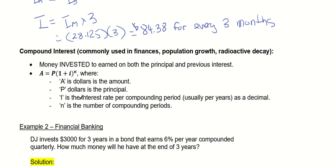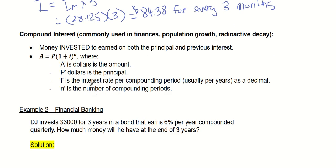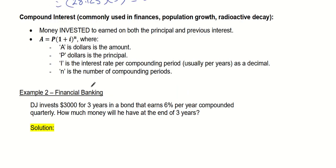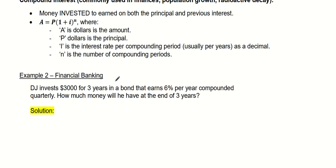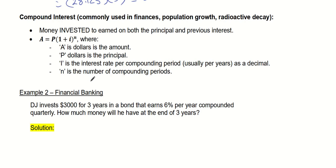Let's look at the next problem. I changed the formula a bit to be simpler, but in this formula I and N are going to change based on what it's compounded by, because this is a compounding interest formula. You look for the word compounding and change I and N accordingly. Compounding interest means you put money in one time into a bank, and over a period of time it gets compounded multiple times until you get your final amount. It's just one payment that gets compounded multiple times per year. This is actually used in finance, population growth, and radioactive decay, but we're using it for finance.